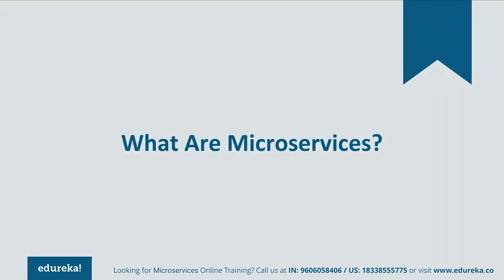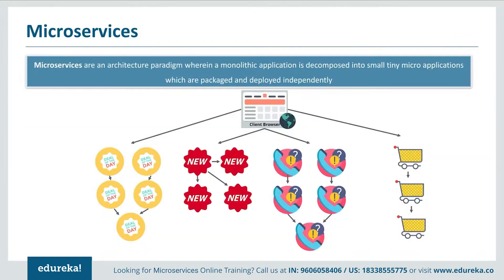To avoid these challenges, developers decided to shift from monolithic architecture to microservices. Many questions may come to mind — what were the advantages of the new architecture? How could developers benefit from it? What were the new challenges faced? Let's discuss each one. Microservices are basically an architecture wherein a monolithic application is decomposed into small, micro applications which are packaged and deployed independently.